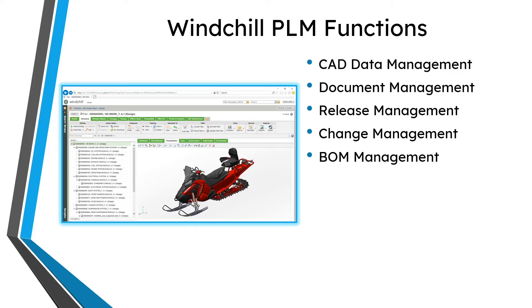Typically for a product you have many different bills of material to create. You have your engineering bill of materials from your design team, but then you need to rearrange it to a manufacturing bill of materials. You also have objects you don't create in CAD that you want to manage — for example, when putting together a bill of materials for how something is shipped, you might include the shipping container, packing foam, a warranty card, or an instruction manual. You can manipulate your bills of material and also create purchasing BOMs or finance BOMs inside Windchill.